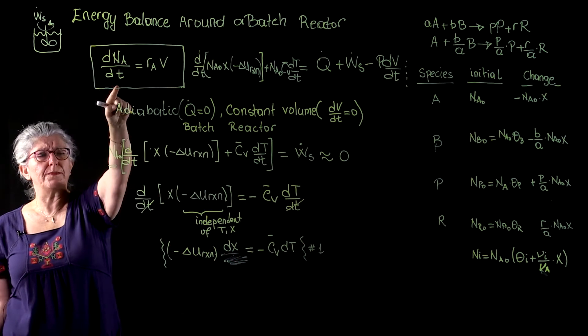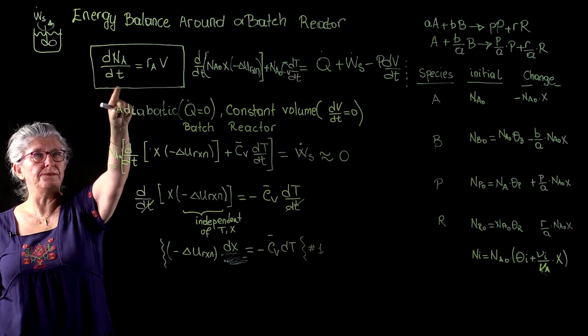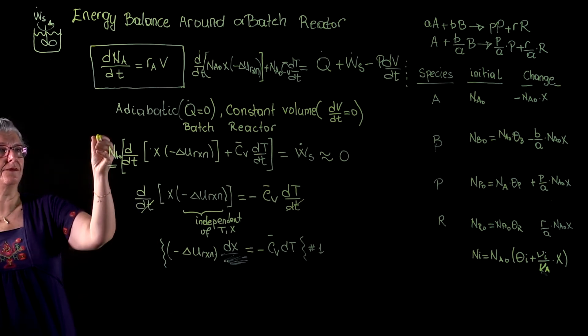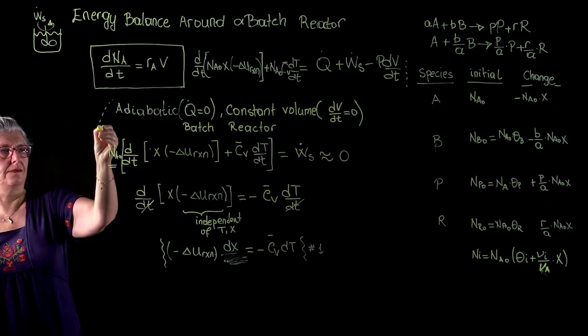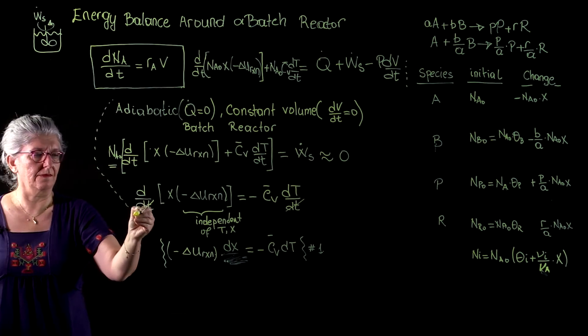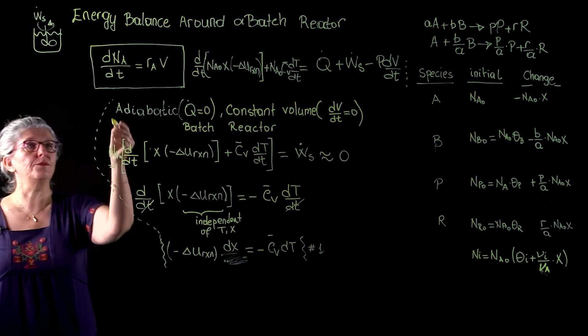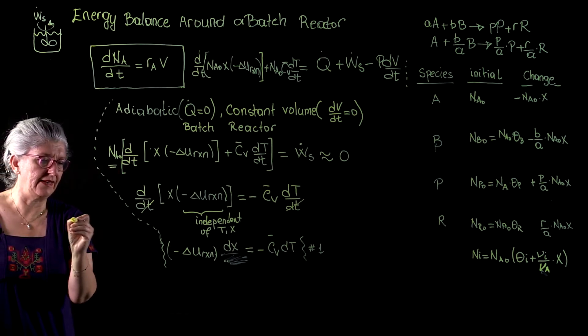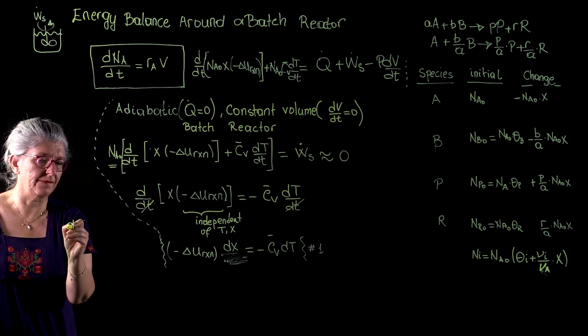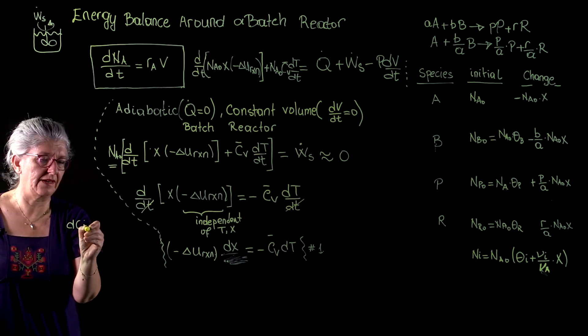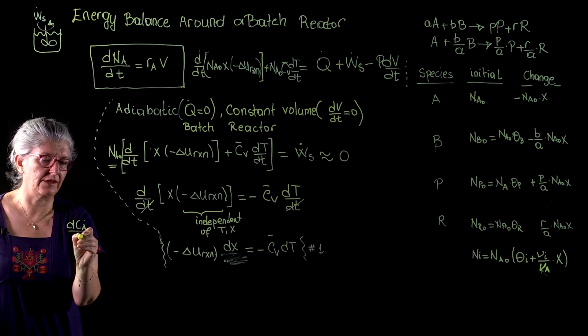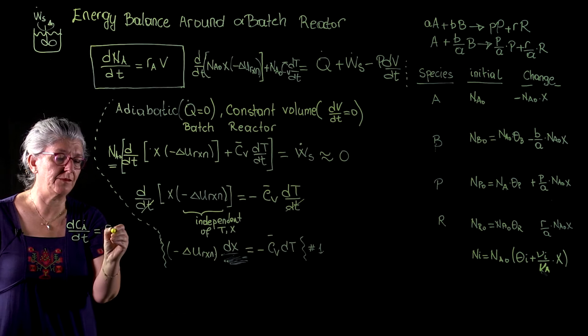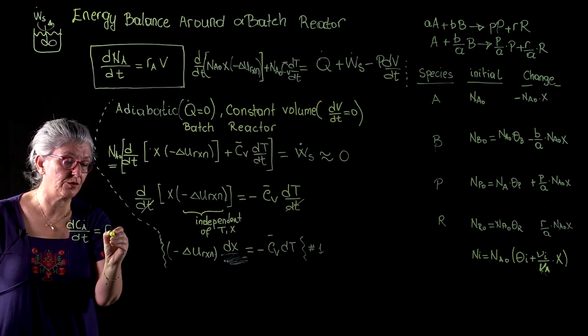From the species conservation equation, for a constant volume batch reactor, we are going to bring in d cA over dt to be equal to rA times v. rA, I'm sorry.